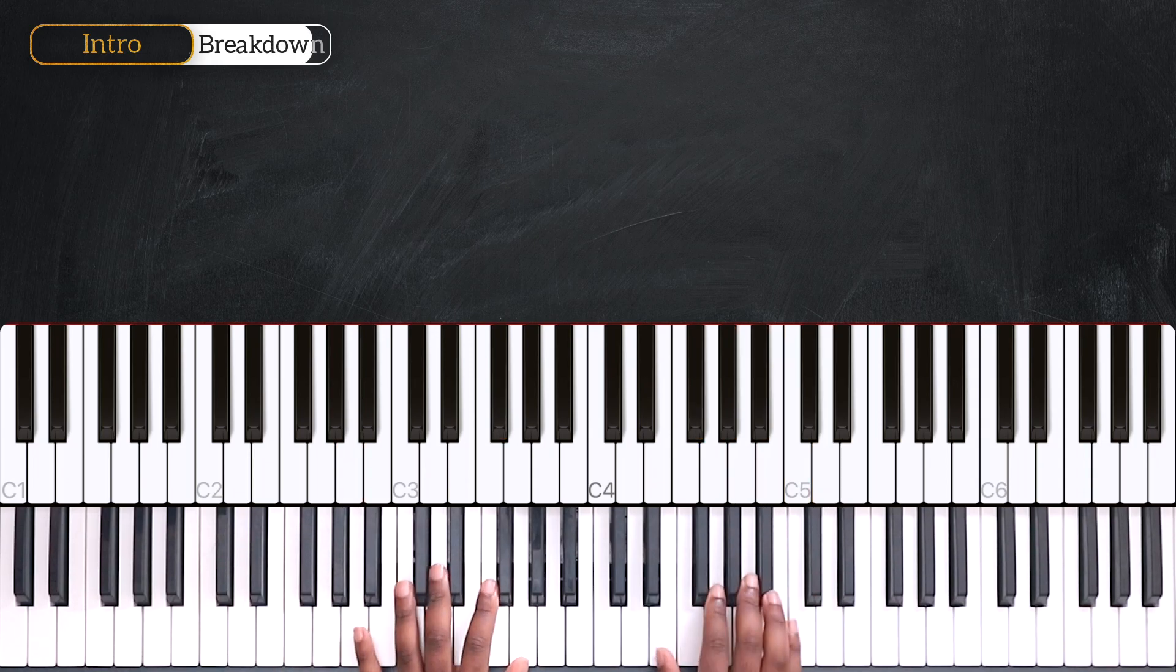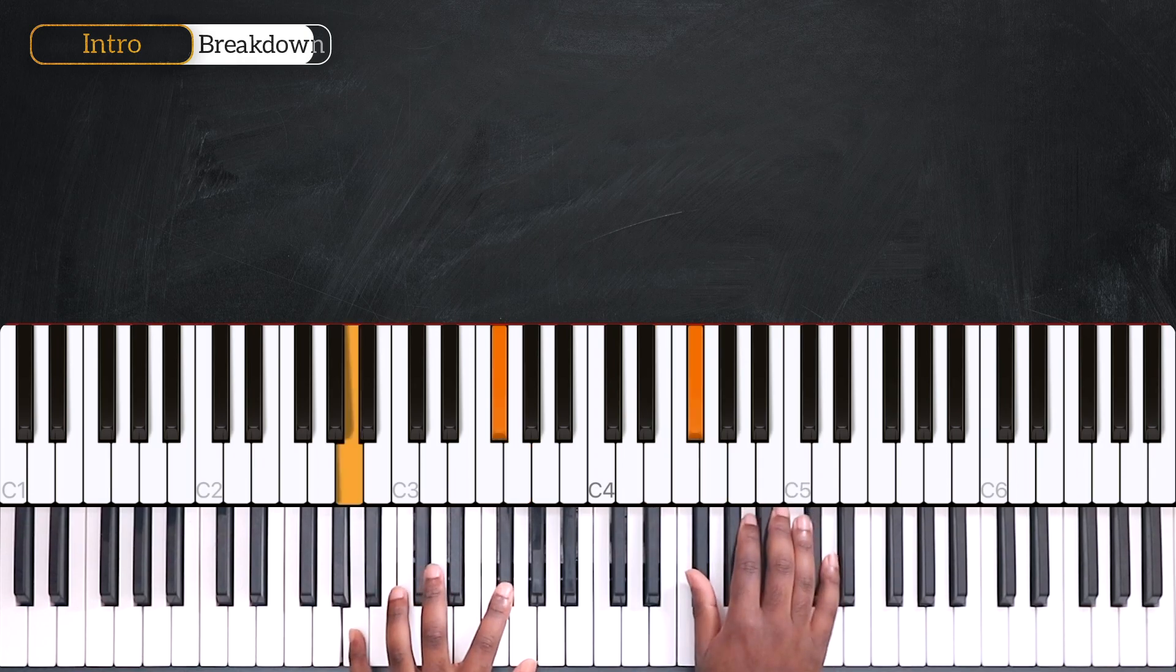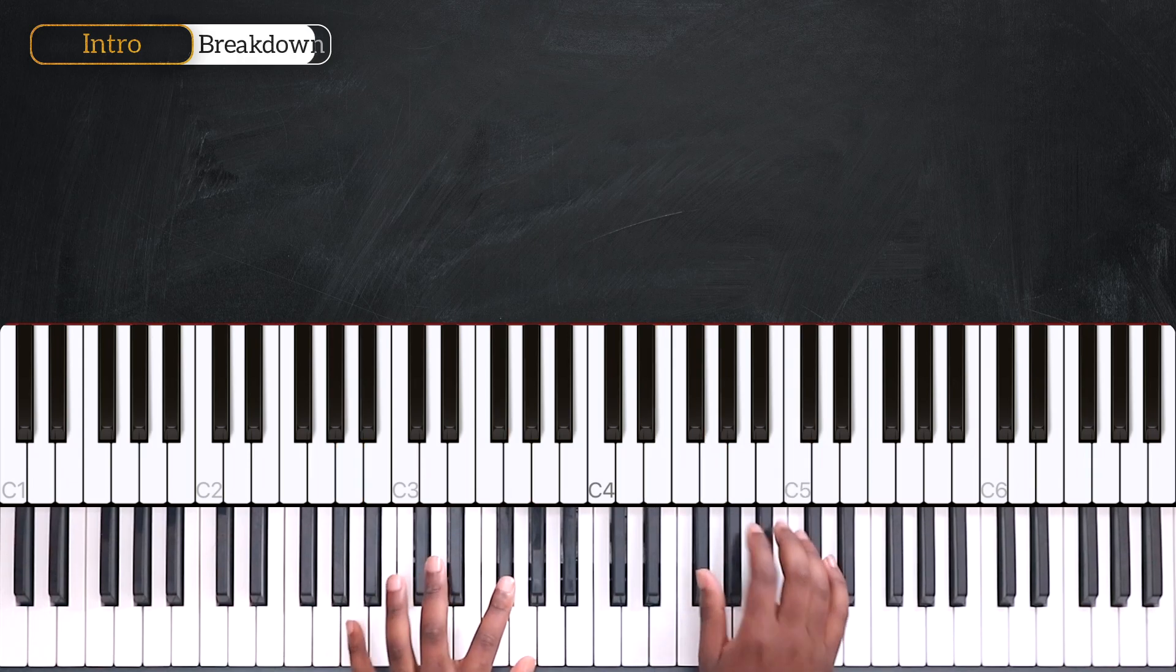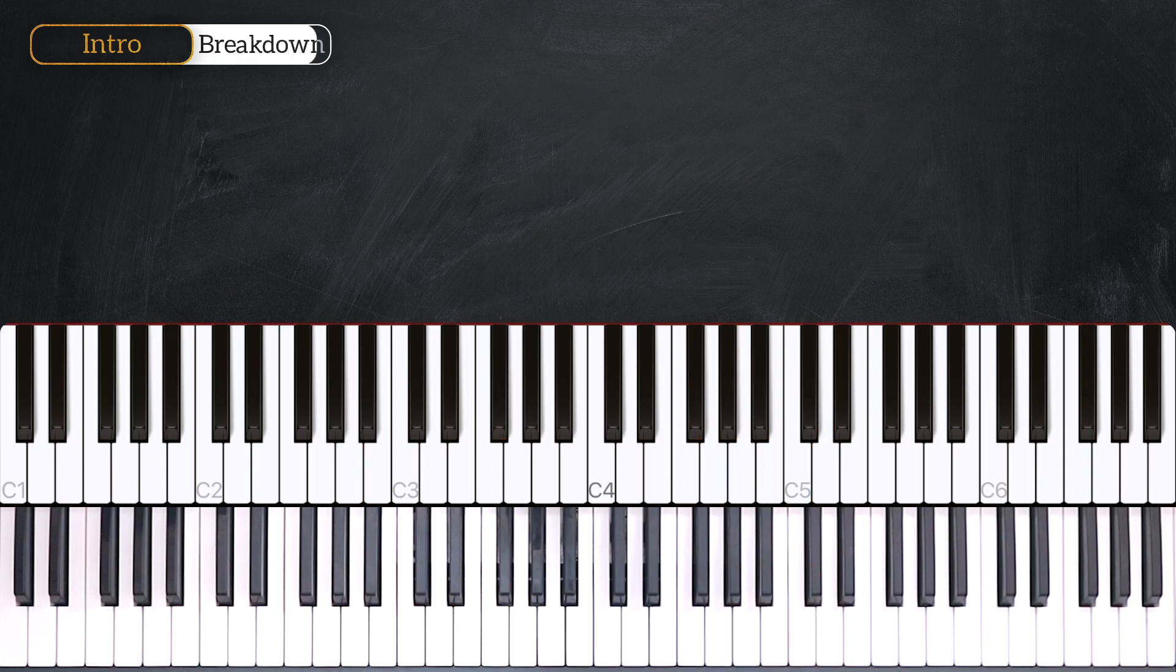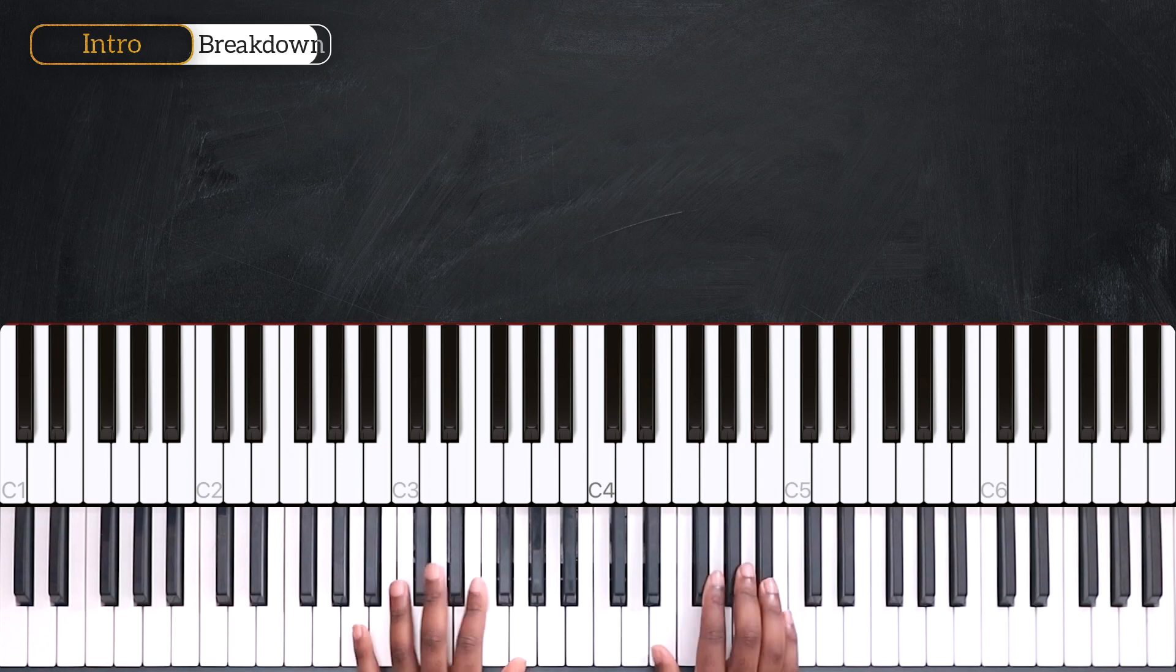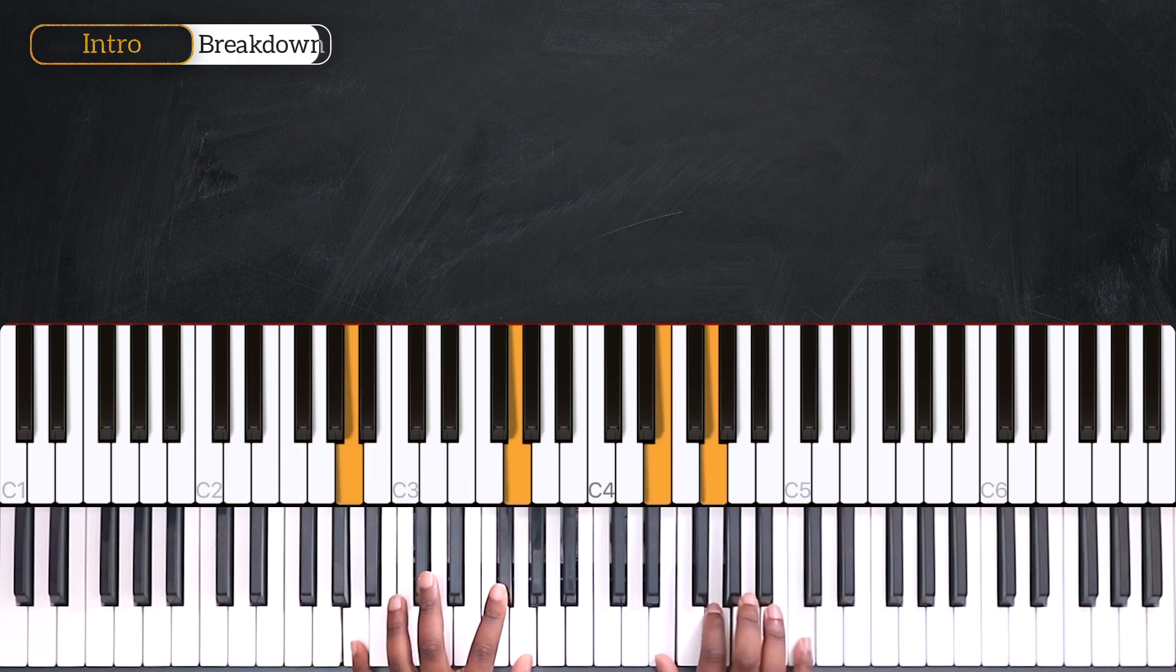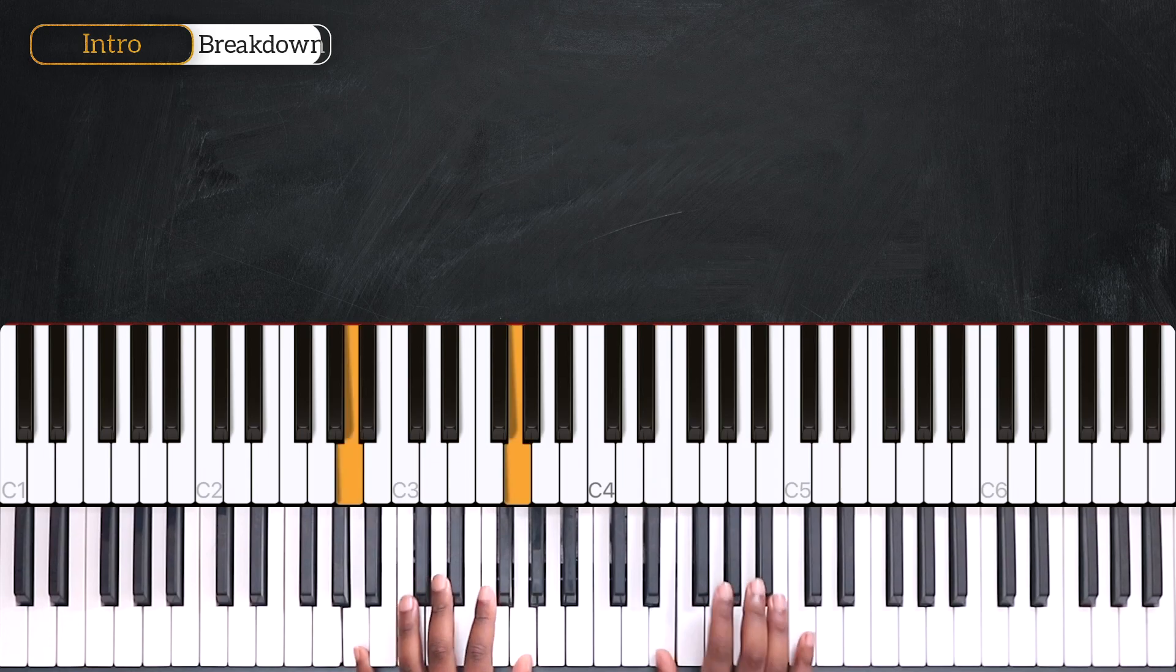And from here, just repeat. And that's all for the intro. Then after that, we're starting the verse with A minor 7.